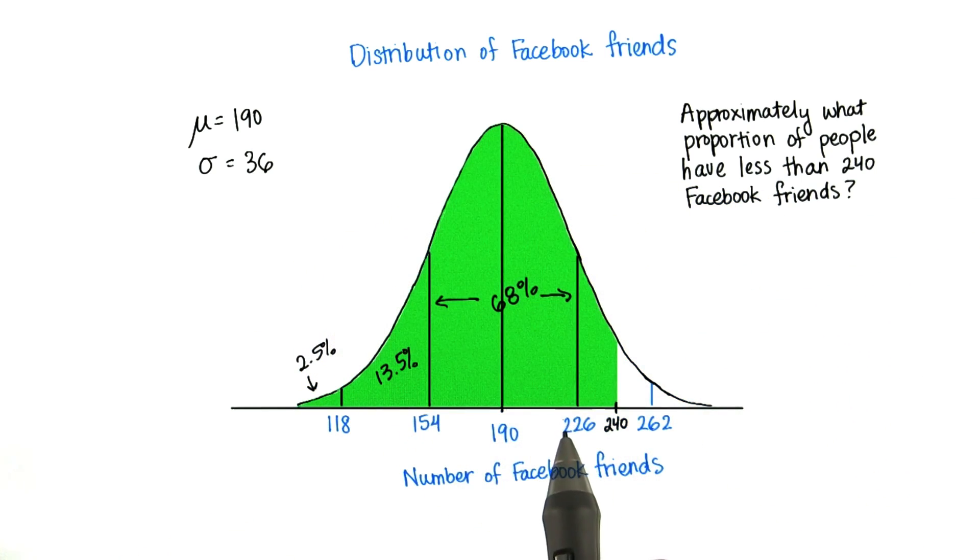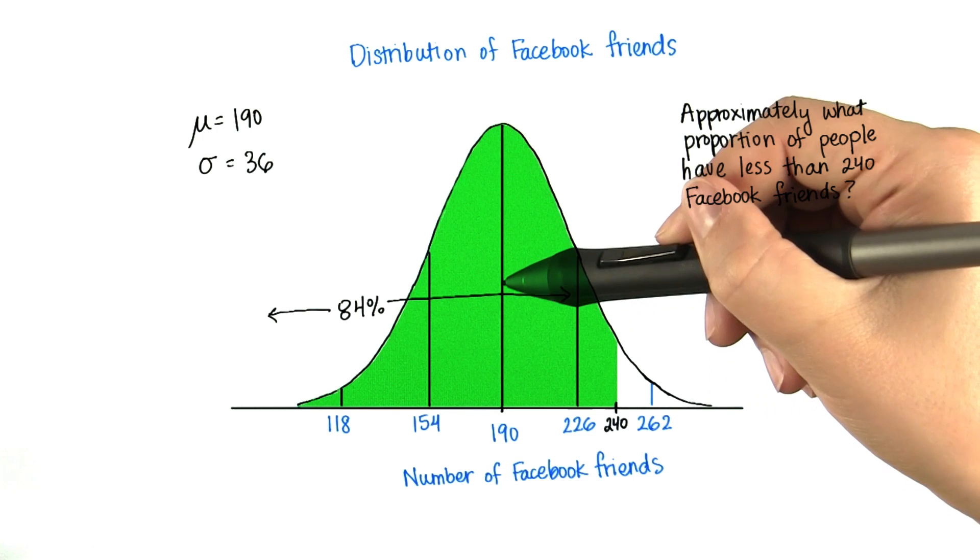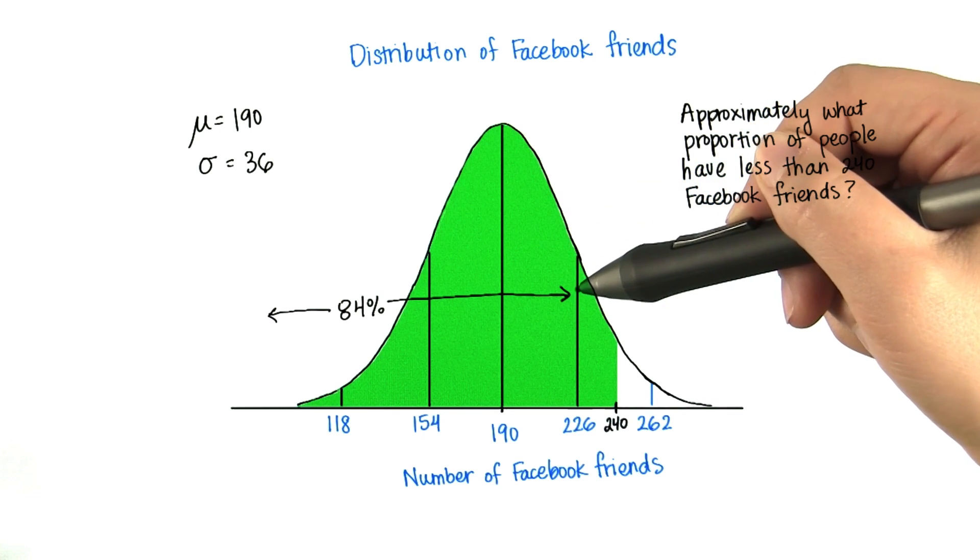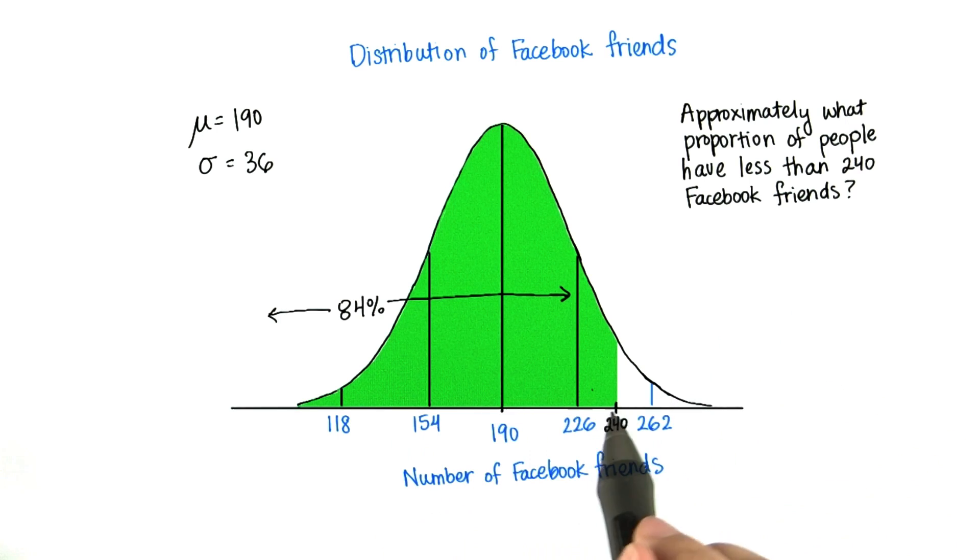So there will be approximately 84% of values between negative infinity and 226. Another way to look at it is since it's symmetrical, you know that 50% is less than the mean, and then you know that 34% is between the mean and 1 standard deviation. So 84% have less than 226 Facebook friends.